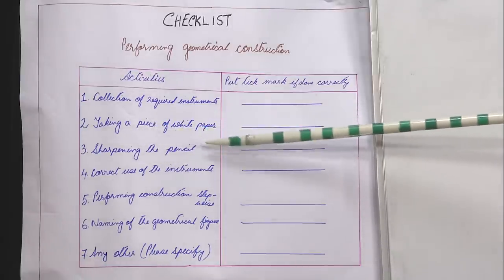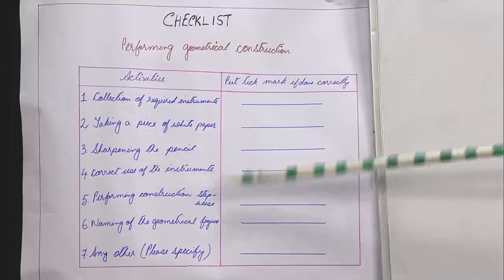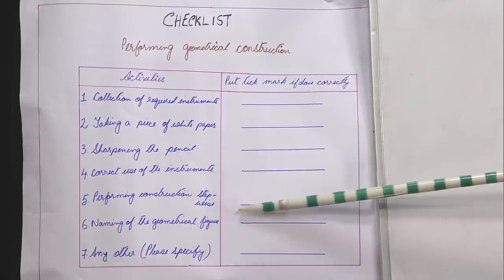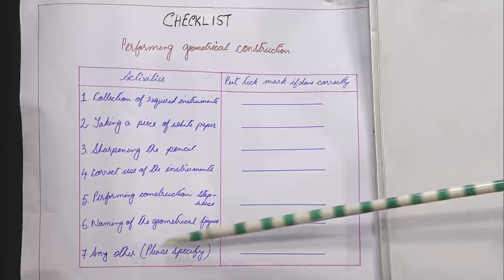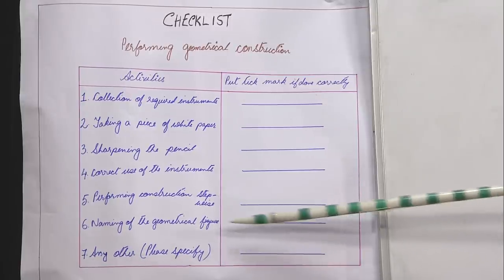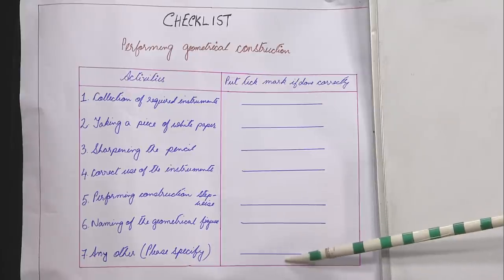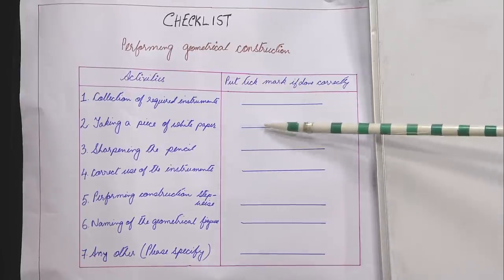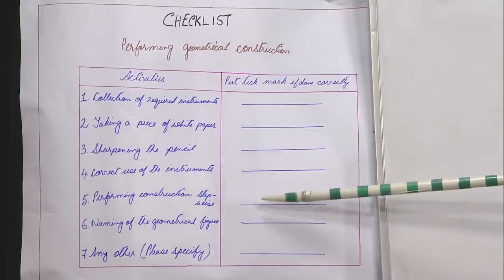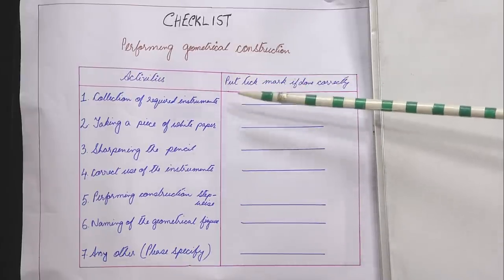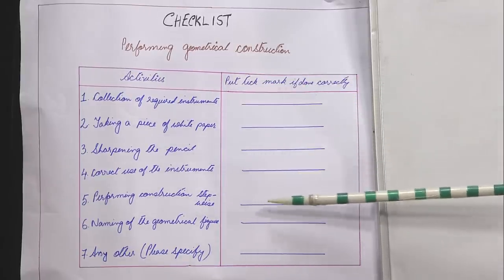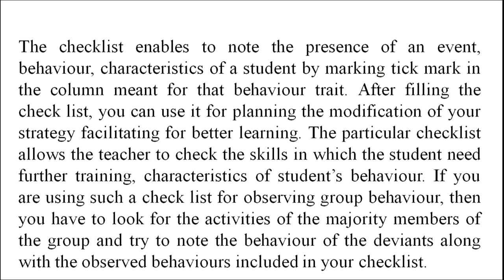Then sharpening of the pencil, correct use of the instruments, performing construction stepwise, numbering of the geometrical figures, and lastly any other relevant item. The teacher will put a tick mark here using this checklist in order to see the performance of the students. The checklist enables us to know the presence of an event, behavior, or characteristics of a student by marking a tick in the column meant for the behavior trait.